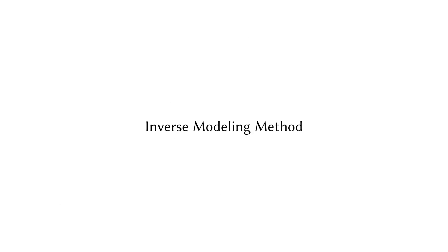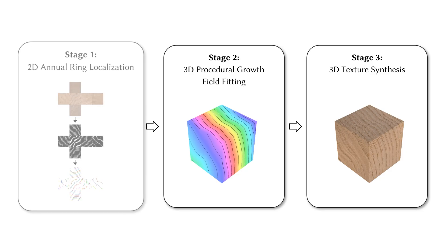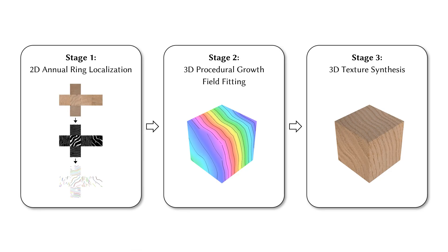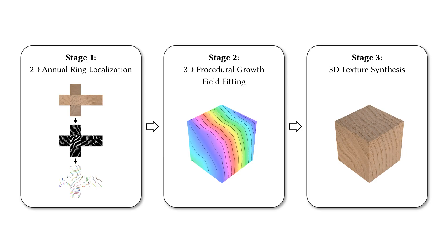We further present an inverse modeling method. It consists of three stages: 2D annual ring localization, 3D procedural growth field fitting, and 3D texture synthesis.